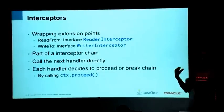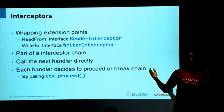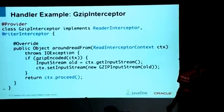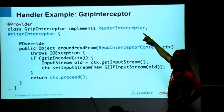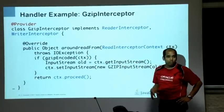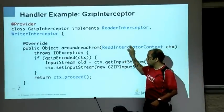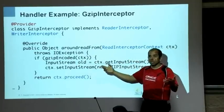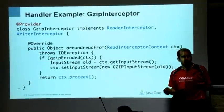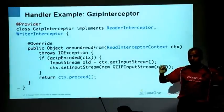Interceptors are wrapping extension points where you can actually modify the request. I have a GzipInterceptor implementing ReadInterceptor and WriterInterceptor, with methods aroundReadFrom and aroundWriteTo — they run around my business methods. Based on the context, if it's already gzip-encoded you can ignore it; if not, you can encode it using standard JDK APIs for g-zipping. The same logic applies for aroundWriteTo — g-zipping on one side and g-zipping on the other.